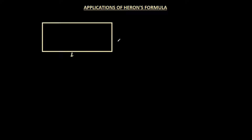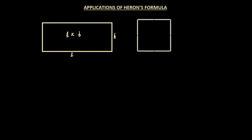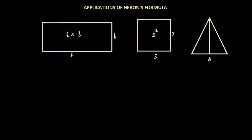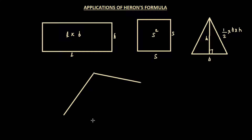We know that if we have a rectangle whose length is L and breadth is B, we can find its area by multiplying the two: L times B. The area of a square with side S is S squared. And for a triangle, we need the base and the height — dropping a perpendicular from one vertex to the opposite side — giving area as half times base times height. But what if we have a quadrilateral — a four-sided figure that is neither a rectangle, square, trapezium, parallelogram, nor rhombus?